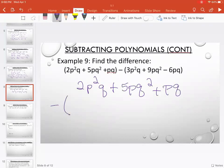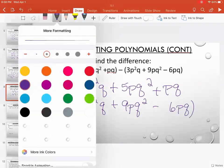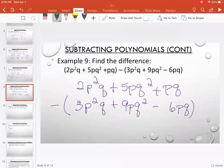Subtracting, and then in parentheses I have 3p squared q, 9pq squared, minus 6p cubed. But remember, when you subtract, you change your signs and add.